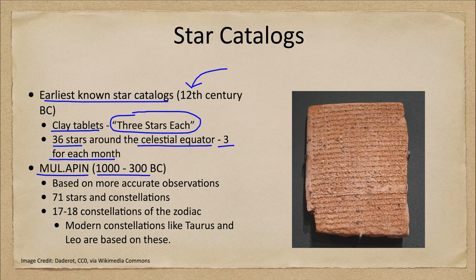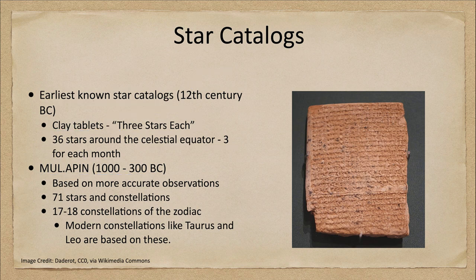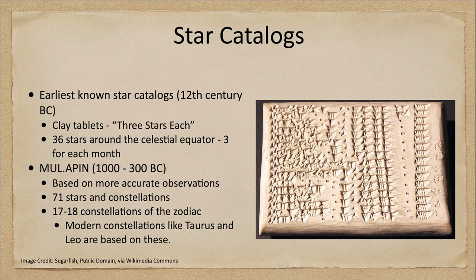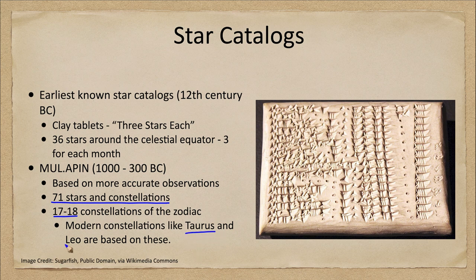A slightly more recent catalog, the MUL.APIN, dates to between about 1000 and 300 BC and was based on far more accurate observations. Still recorded on clay tablets, it divided the sky into 71 stars and constellations. The constellations of the zodiac — the path of the sun through the sky — numbered 17 to 18, and some, like Taurus and Leo, are still used today.